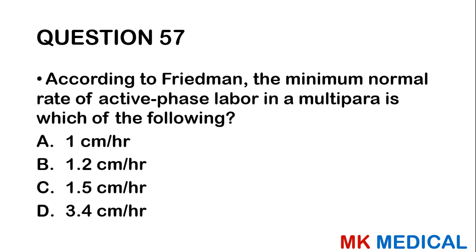Question fifty-seven: According to Friedman, the minimum normal rate of active phase labor in a multipara is which of the following? 1 cm per hour, 1.2 cm per hour, 1.5 cm per hour, or 3.4 cm per hour. Progression of labor in multiparous women is faster than in nulliparous women. Most likely this woman should have a minimum rate of 1.5 cm per hour.